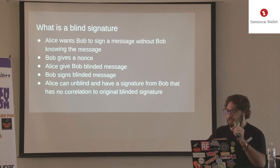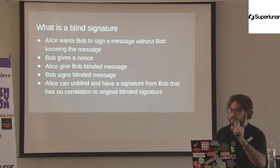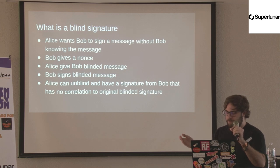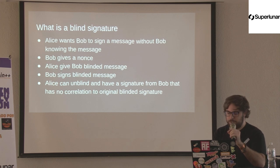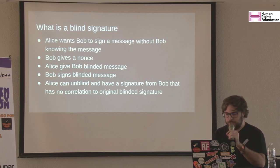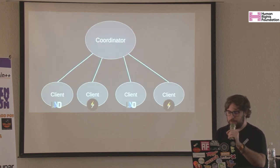Liza and all these people could come and present their signatures, and Bob will know all of these signatures are correct, but he doesn't know who gave him which one. This is how they use blind signatures in the protocol to get some privacy.